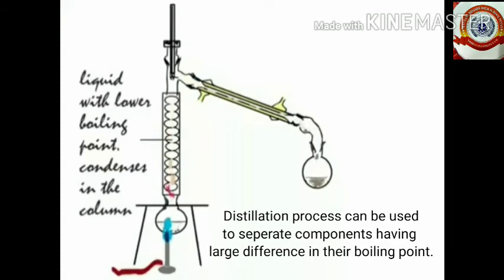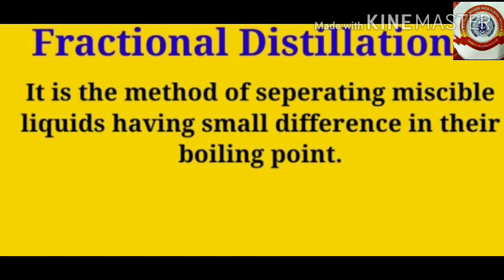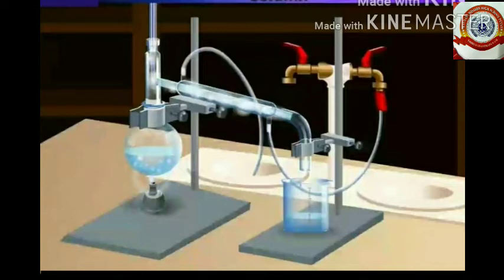The next method we discussed is distillation. When one component of the mixture is volatile and the other does not vaporize under the same conditions, they can be separated by distillation. Fractional distillation is the method of separating miscible liquids having a very small difference in their boiling points. Distillation is used to separate components from a mixture of liquid substances where there is a substantial difference in boiling points. If the difference is very small, fractional distillation is used.